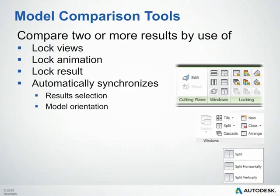There are also model comparison tools available, very helpful when comparing two or more iterations or models. They allow you to lock views, lock animations, and lock results. When locked together, this automatically synchronizes any results you turn on or off, as well as model orientation — so as you rotate one model, it will rotate all other locked models as well.